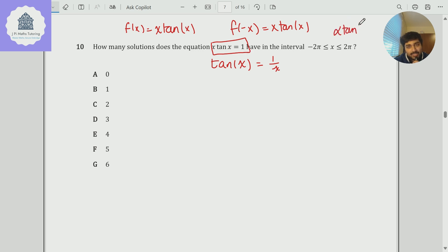then also minus alpha times tan of minus alpha will also be 1. Therefore, I must have an even number of solutions, because any positive solution is going to have a negative counterpart. So straight away, I can eliminate those without actually doing any maths or any actual sketching of a graph.